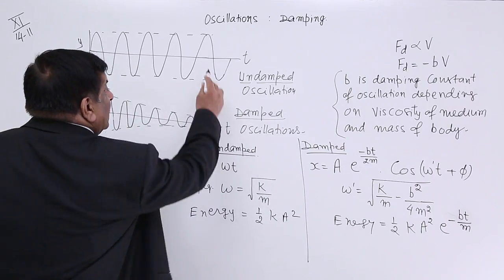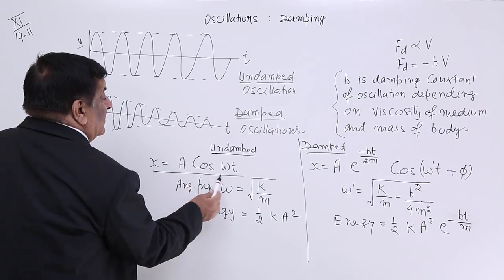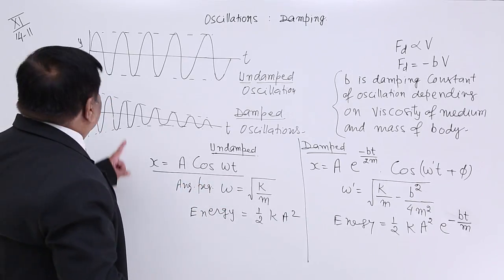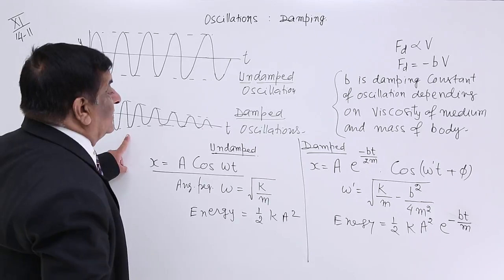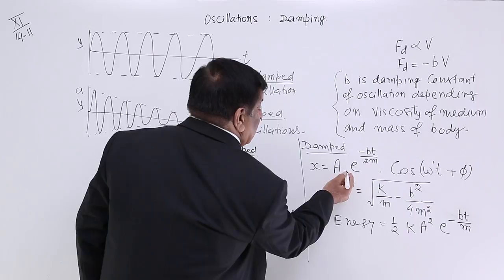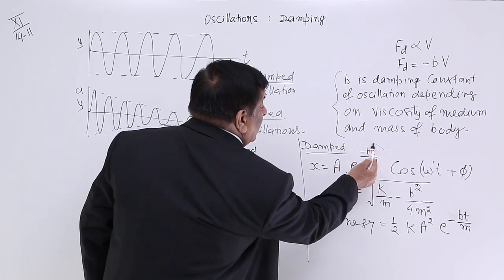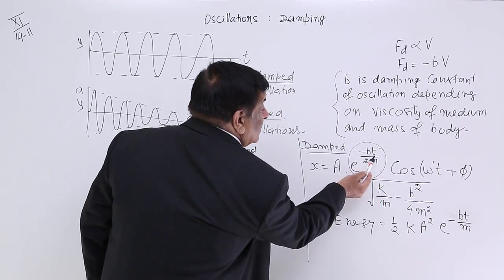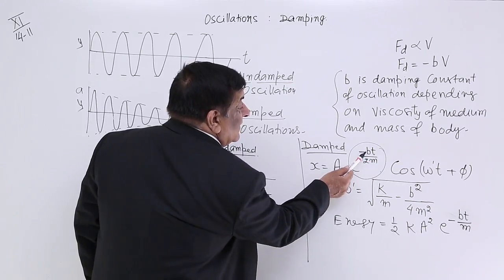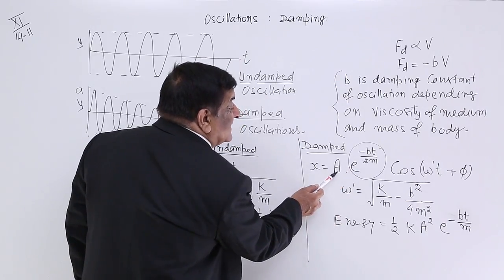By the time it stops becoming less and less, it is oscillating. During this oscillation, the quantities of oscillation are also affected by damping force. How these are affected? See. Here, this is damped oscillation and our equation of displacement is x equals amplitude A and frequency omega: A cos omega t. When it is a damped oscillation, then this equation x equals A is there.